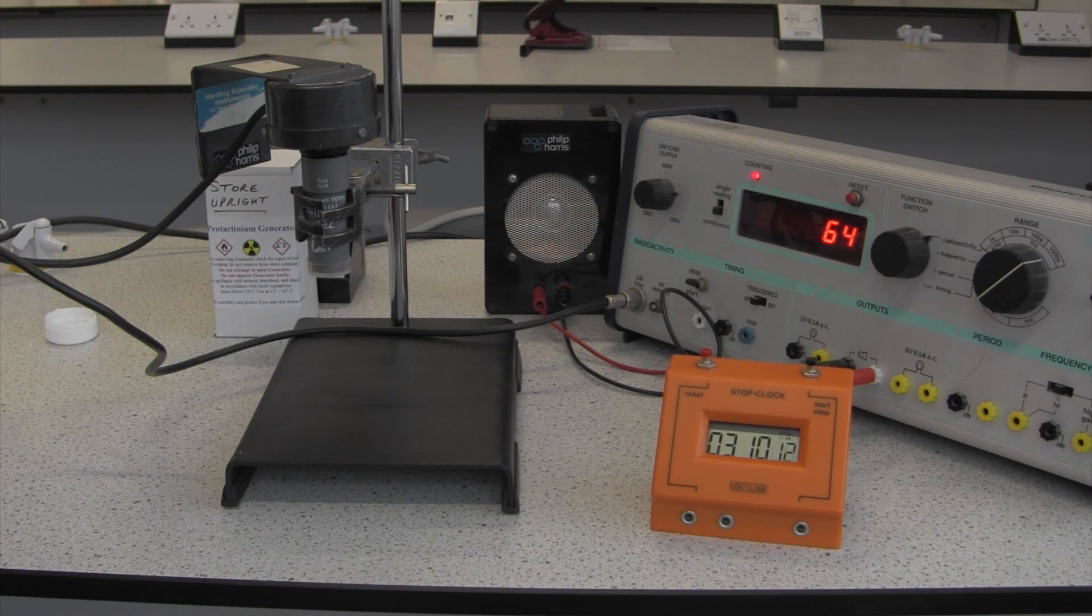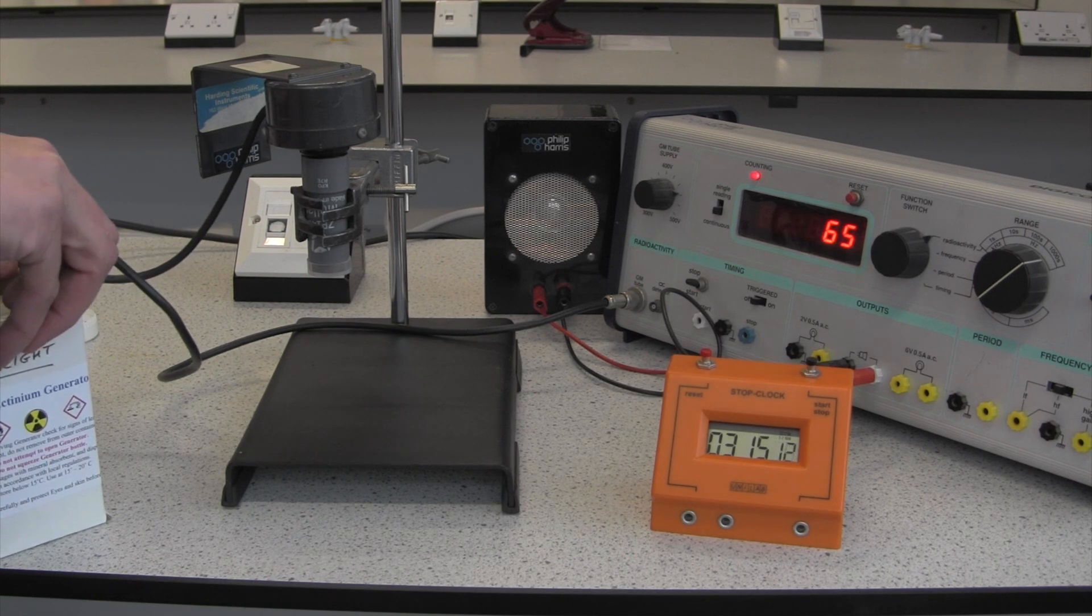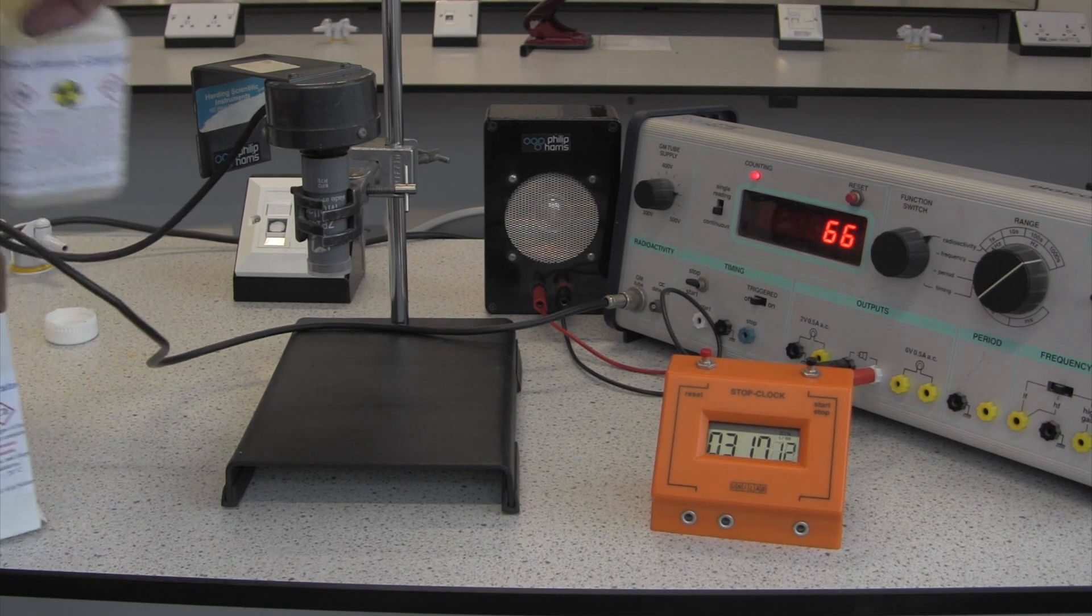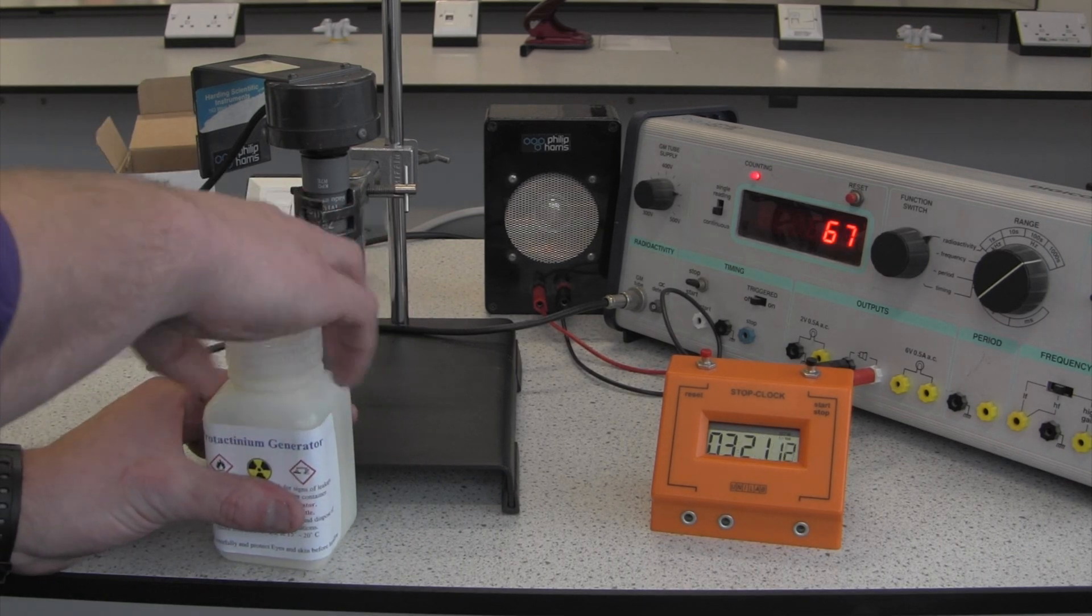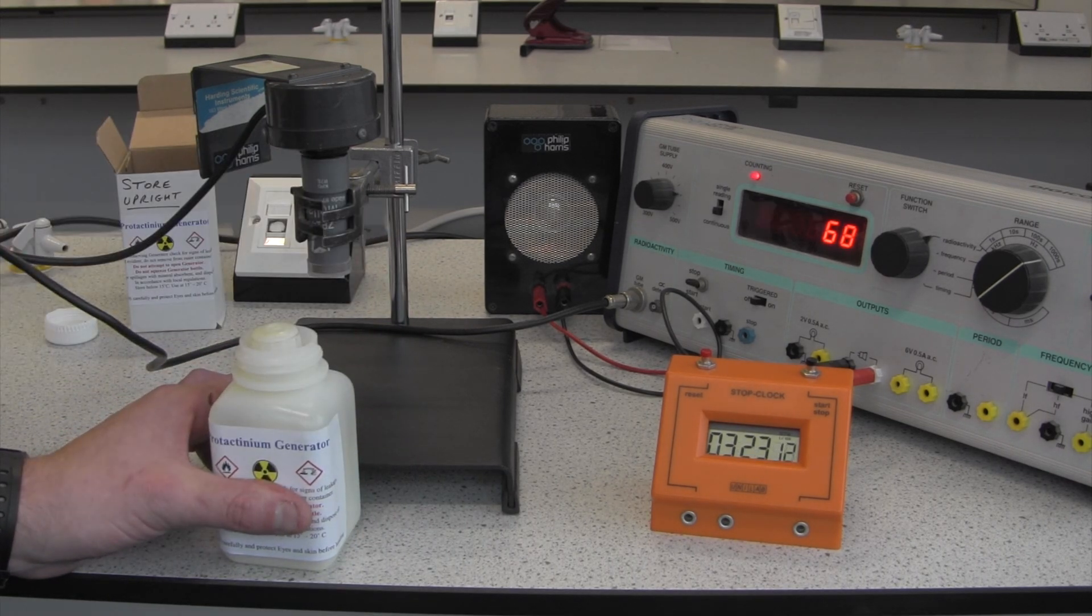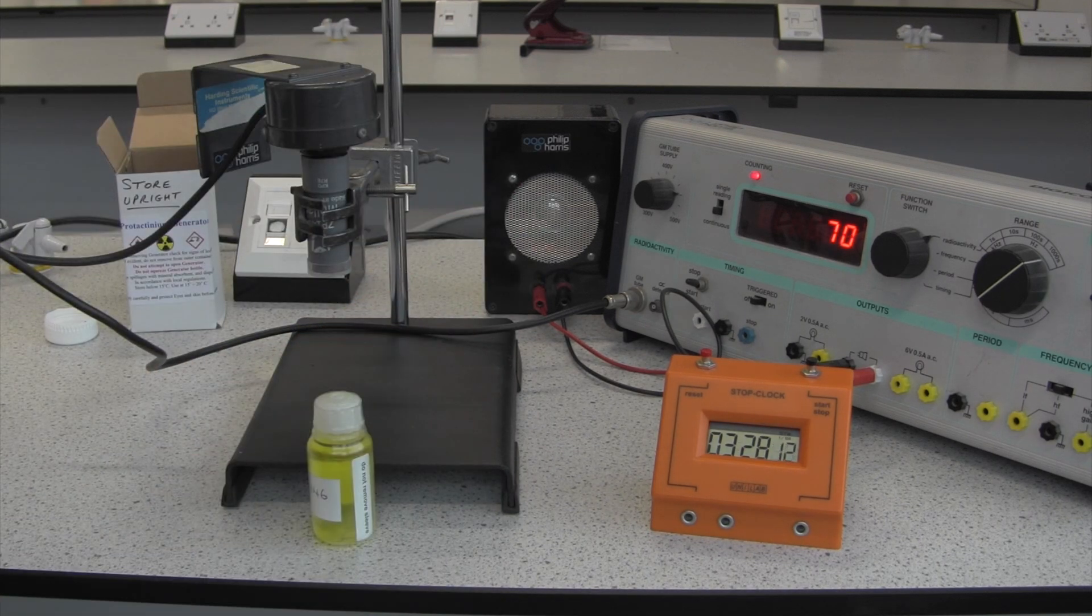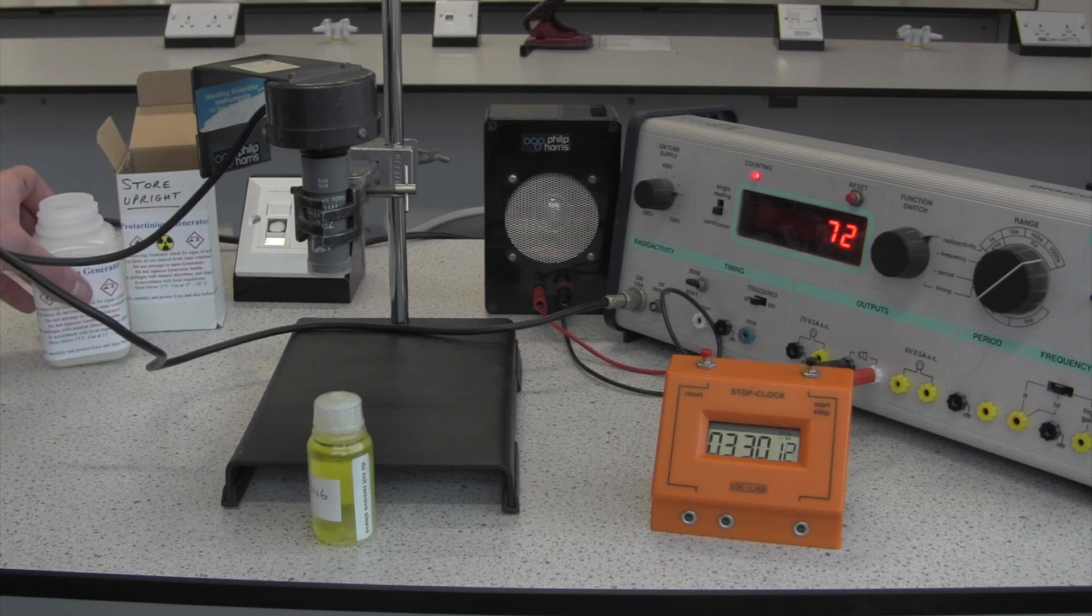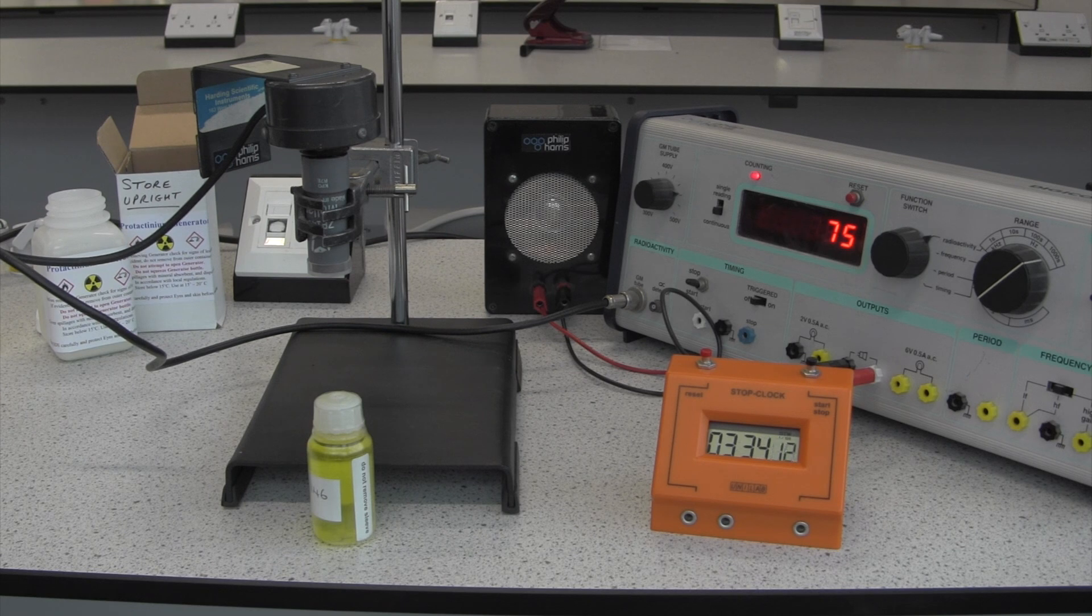So to do that, we're going to get our protactinium generator out of the box. And to get a protactinium generator working, you need to shake it. And I'll put a link underneath this video to explain where the website explains how a protactinium generator works. So we've got it out of the box, and to activate it, we shake it.